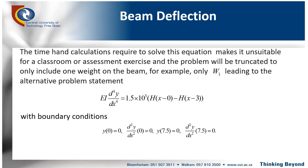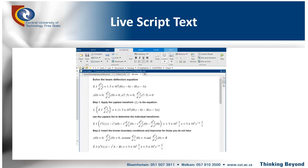The time hand calculations required to solve this equation, if you use Laplace transform to solve this equation, is unsuited to classroom environment and assessments. And you would ideally just truncate it to the inclusion of only one weight on this beam. For instance, you would say, let's just truncate it and put on W1, just the first weight, leave the other two out for now. Boundary conditions remain the same as the situation remains the same.